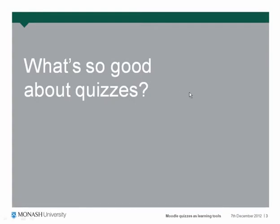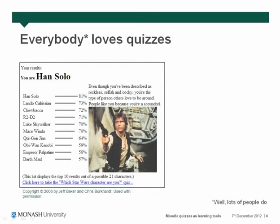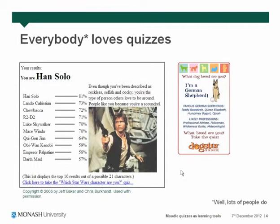So what's so good about quizzes? Anybody seems to do quizzes for all sorts of silly reasons. If you look online, you can find out what sort of pop fan you are, and what kind of Star Wars character you are. I did this quiz and it turns out I'm Han Solo. I didn't really want to be Han Solo, so I took the quiz again and then I was Chewbacca. But when I told my friends on Facebook, everybody else wanted to know which Star Wars character they were. Kirstie is Obi-Wan. I'm also apparently a German shepherd, and it says I'd be a good athlete, a policeman, a wilderness guide, or a meteorologist.